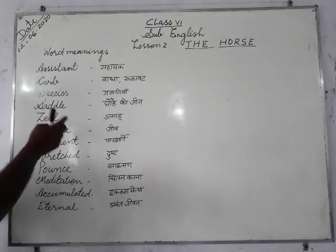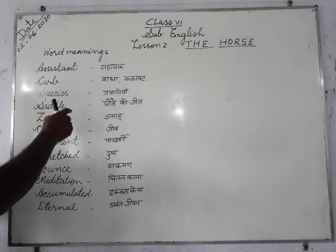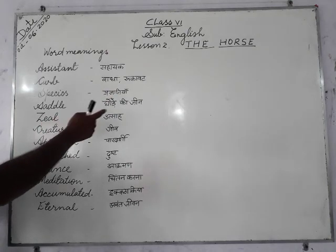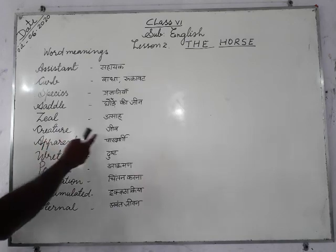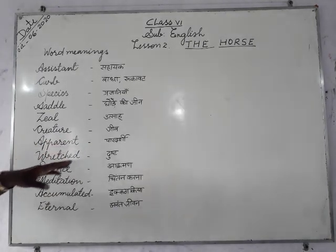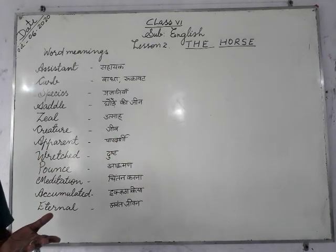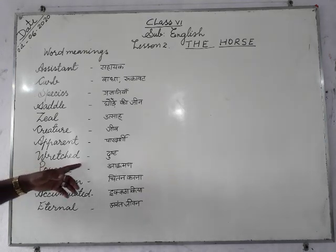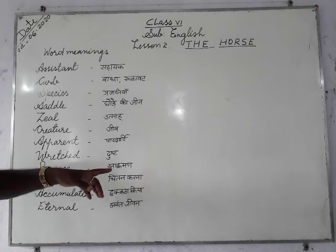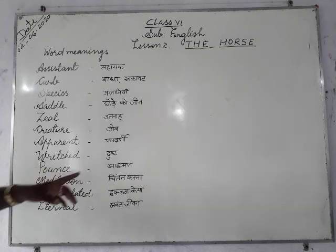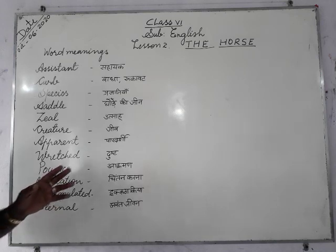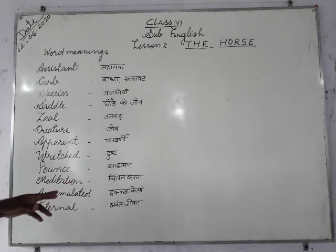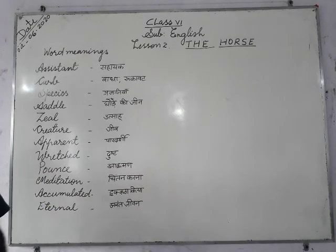Spaces — prajatiyan. Saddle — ghode ki zin. Source — utsa. Creature — jeev. Appearance — pratdarshya or spasht. Rude — means not of good manner; that is called 'dust' in Hindi. Pawns — here it is a noun, meaning akramat.